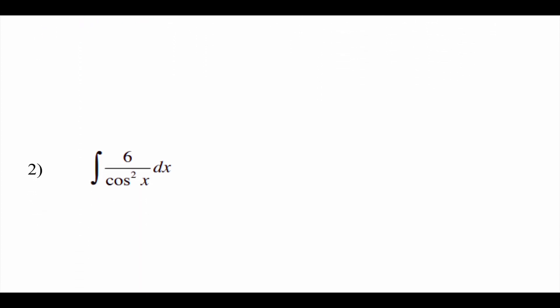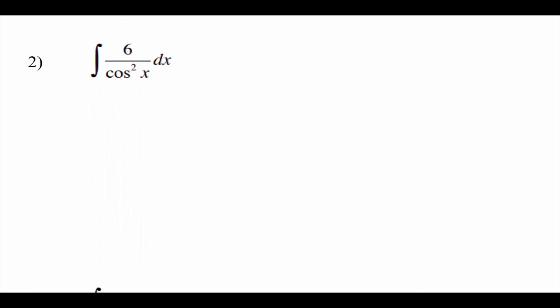Number two looks like division: six divided by cosine squared of x. We don't have a quotient rule for anti-derivatives, so we have to find a different approach. When you have a fraction, the easiest approach is to break it up — so six times one over cosine squared of x. It still says the same thing, but broken up.